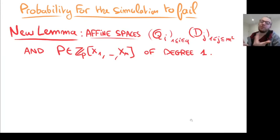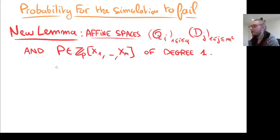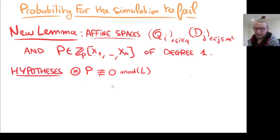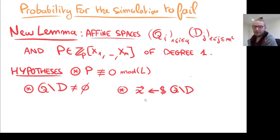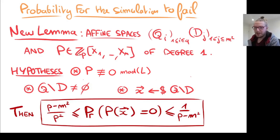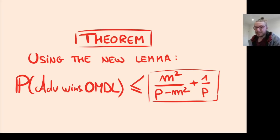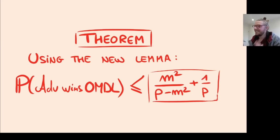We introduce a new lemma to replace Schwartz-Zippel: if x belongs to the intersection of certain affine spaces (from discrete log queries) but not others, and we have a degree-1 polynomial p independent of all polynomials computed via discrete log queries, and the space is non-empty, and x is drawn uniformly at random from this space — then we can bound the probability that p(x) = 0. The probability that the adversary wins is then m² times this probability, summing simulation failure plus the adversary's chance of winning in the simulation. This gives our main theorem: the probability of winning one more discrete log is negligible.